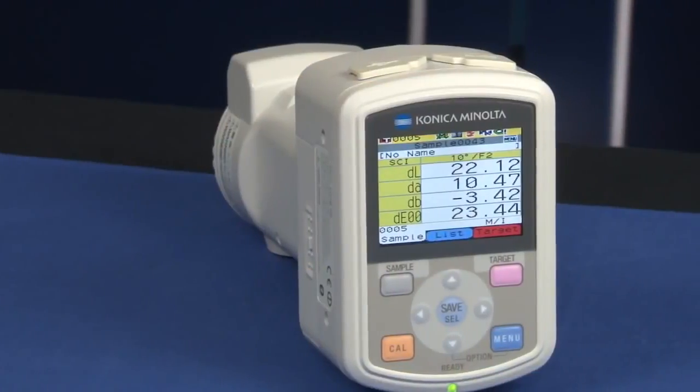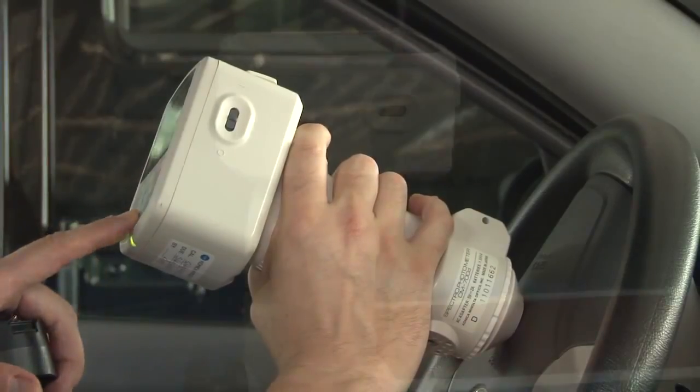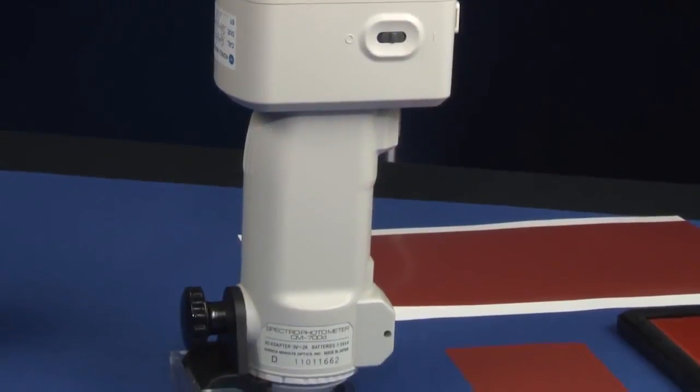Inspect, sort, select, classify, or grade your product anywhere with Konica Minolta's CM700D Spectrophotometer.